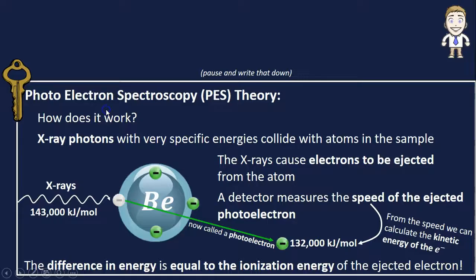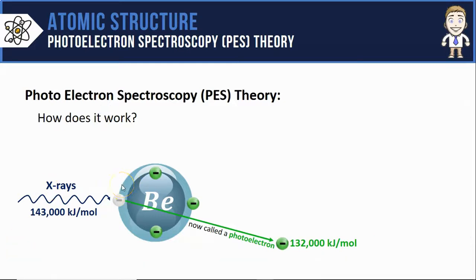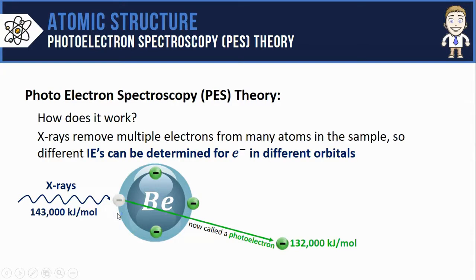This is a pretty nice summary of how PES works, so make sure to take some time and write it down. So we just determined the ionization energy of the electrons in this outermost shell. But if we kept bombarding these atoms with more x-rays, the x-rays would remove multiple electrons from many different atoms in the sample, and we could calculate the different ionization energies for all the electrons in all the different orbitals that the atoms have.